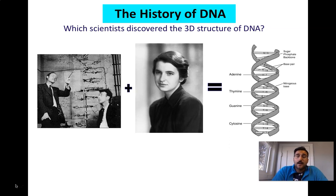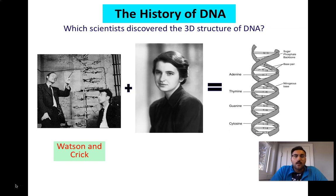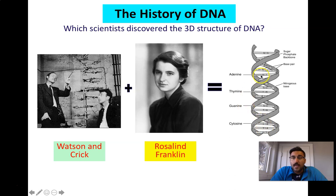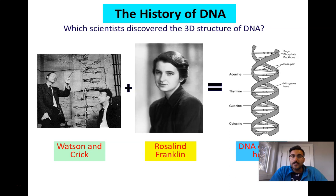We know the structure of DNA thanks to three vitally important scientists: two gentlemen named Watson and Crick, but perhaps more importantly, Rosalind Franklin. Together, using Franklin's expert technology and Watson and Crick's structural information, we identified four base pairs that make up DNA — A, T, C, and G: adenine, thymine, guanine, and cytosine — and they pair off in what we call a DNA double helix.